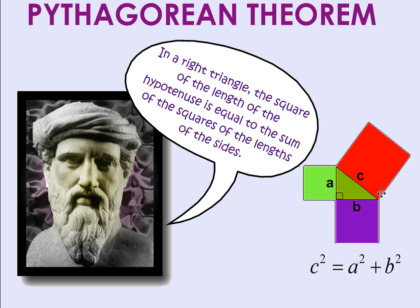Our hypotenuse is represented by C, and will always be C. The other legs will be A and B. And if you take the length of C, square it, it'll be equal to A squared plus B squared. And that's our Pythagorean Theorem.